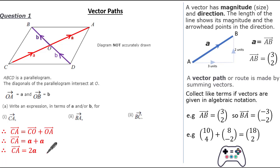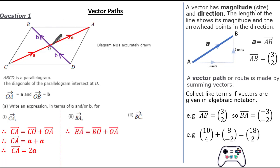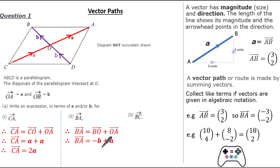Now let's have a look at vector BA. We want to get from B to A, but we have no vector given directly, so let's see if we can identify our vector path. To get from B to A, we can go from B to O and then O to A. The vector BO is in the opposite direction of OB, so therefore it's simply minus b, and then we go O to A which is vector a. Therefore, our vector BA is simply a minus b.